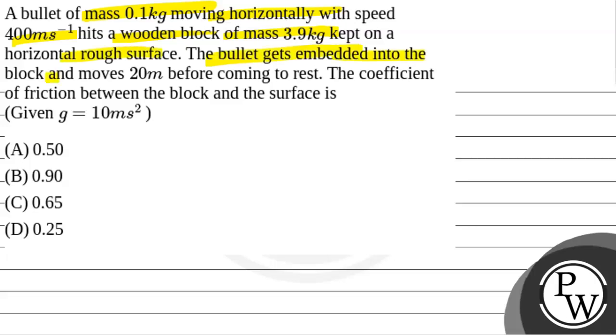The bullet gets embedded into the block and moves 20 meter before coming to rest. The coefficient of friction between the block and the surface is, given g is equal to 10 meter per second square.